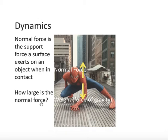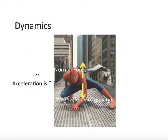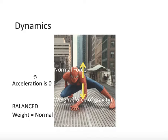How large is the normal force? Well, the acceleration in this situation is zero. The character is not moving up or down — the character is posing for a selfie. In this situation, when the acceleration is zero, we say the forces are balanced. It means that the weight, or the force of gravity, is equal to the normal force, the support force. These two vectors are the same, and notice they're drawn the same length. It's important that if the vectors are equal, the lengths of these vectors should be drawn the same.